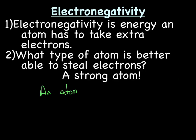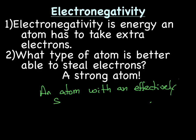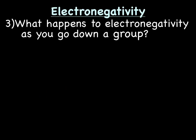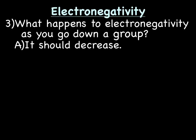An atom with an effectively stronger nucleus. We're comparing the number of protons versus the number of energy levels and core electrons. So what happens to electronegativity as you go down a group? We need stronger atoms to have more electronegativity — better ability to steal electrons. Electronegativity should decrease as you go down a group.